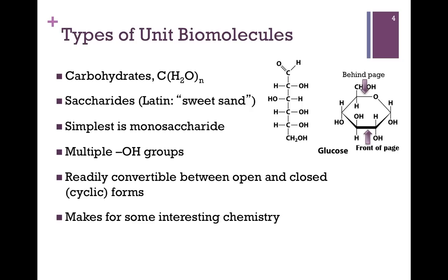Our next class of biological molecules includes carbohydrates — literally hydrates of carbon, from the chemical formula highlighted here. They're also known as saccharides, from the Latin meaning sweet sand. The simplest carbohydrate, or sugar, is a monosaccharide, such as glucose, illustrated to the right. As you can see from the structure of this molecule, carbohydrates carry multiple OH groups and are readily convertible between the linear, or open form on the left,